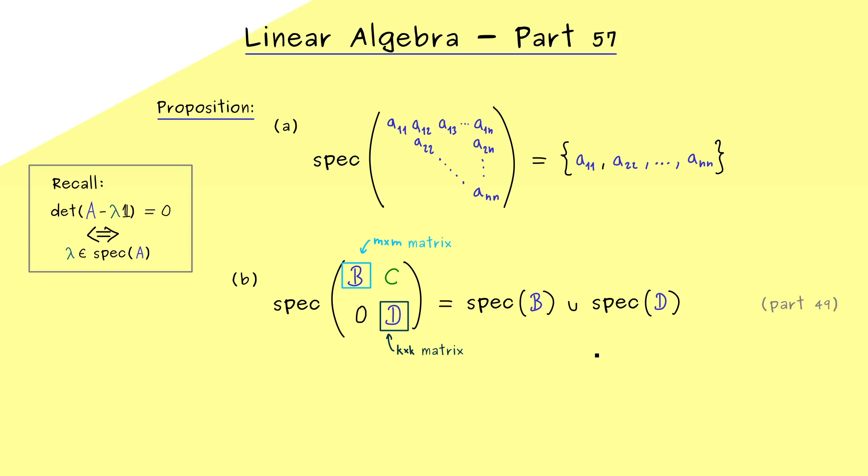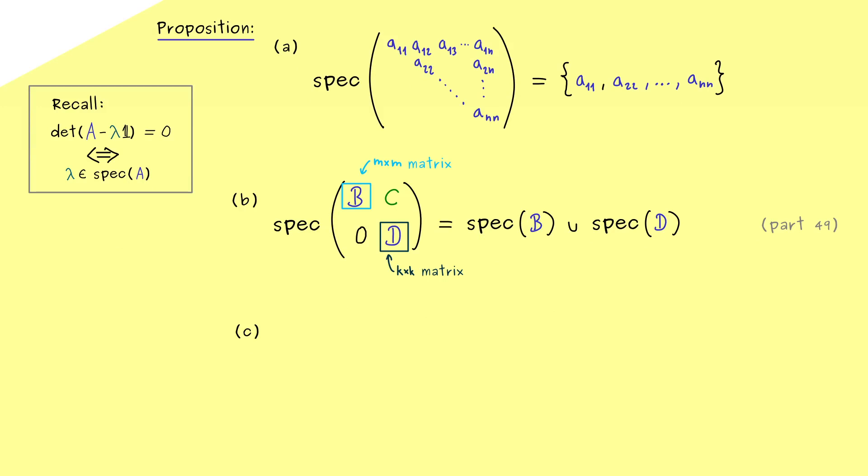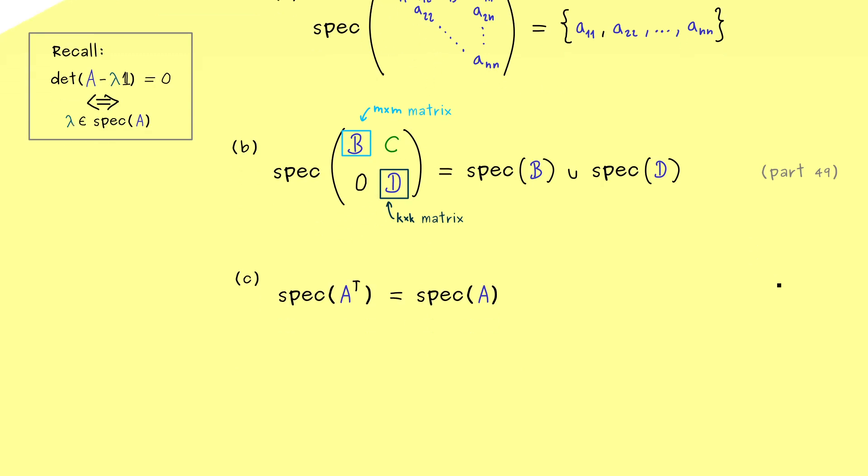And I can also tell you this was not so long ago. This was part 49. Moreover also in this part we proved that the determinant does not change under the transpose. Hence the set of eigenvalues of A transpose is the same as the set of eigenvalues of A. And of course this nice fact immediately implies that the two properties from above also hold for lower triangular matrices. In other words in the case that the zeros are not below the diagonal but above the diagonal. And that's something we now present in examples.